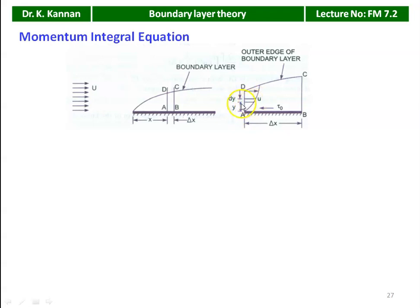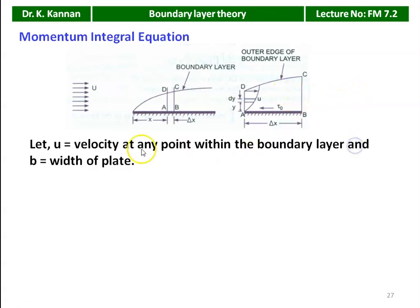The thickness of the fluid strip is dy. The fluid is entering through face AD and leaving through face BC; fluid also enters through face DC. u is the velocity at any point within the boundary layer, and B is the width of the plate, perpendicular to the screen. δx is the length of the fluid element and δ is the height of the boundary layer.